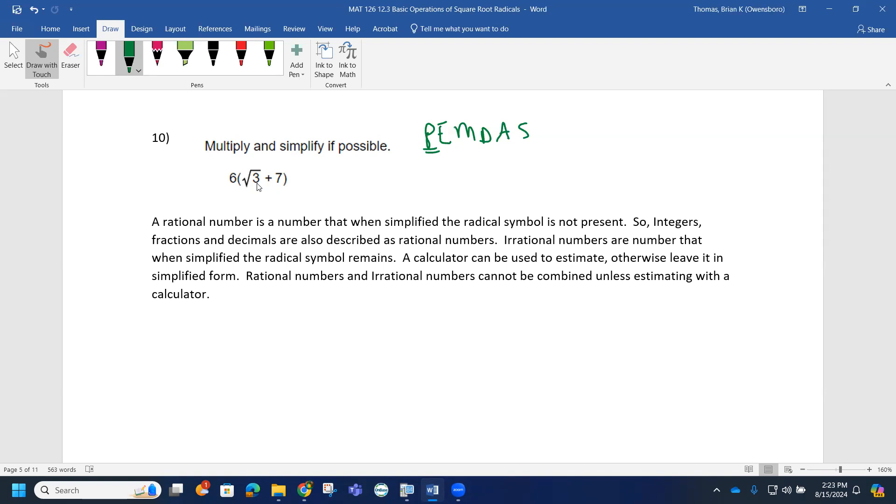This is considered an irrational number while the seven is considered rational. A rational number is a number that when simplified the radical symbol is not present. So if you don't see the radical symbol, that means that number is rational. Notice how the six is rational, but the three still has the radical present so it's irrational. The seven has no radical symbol present.